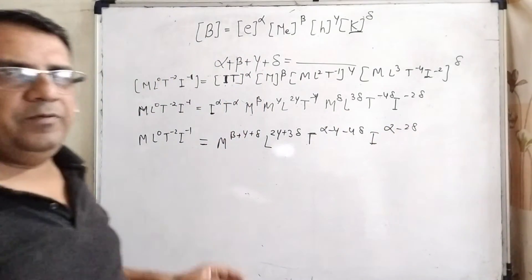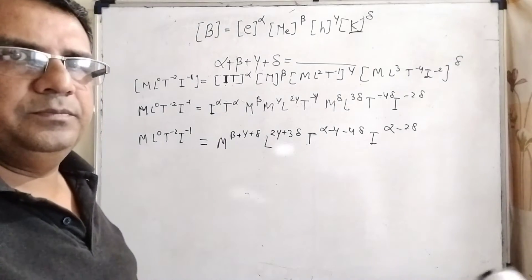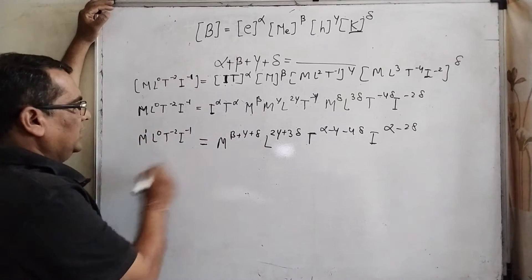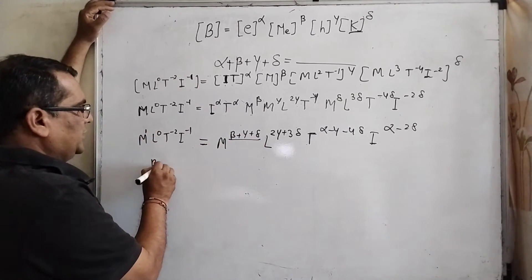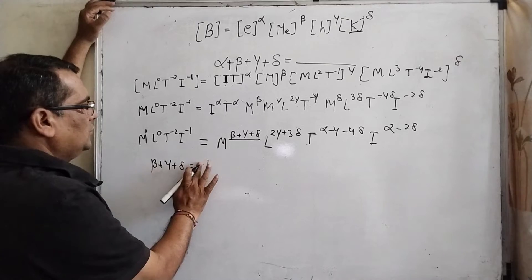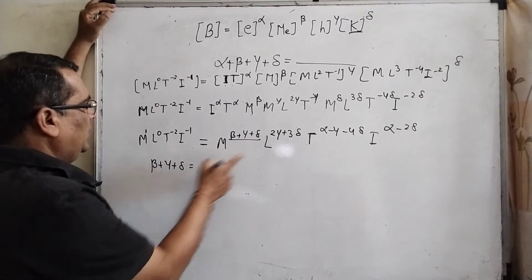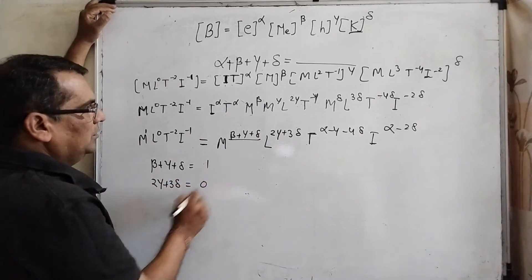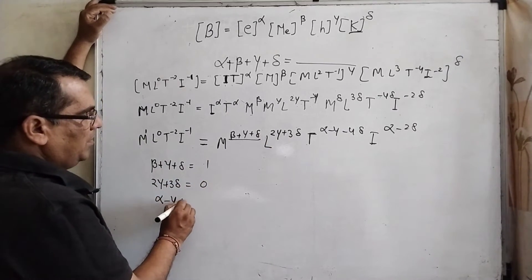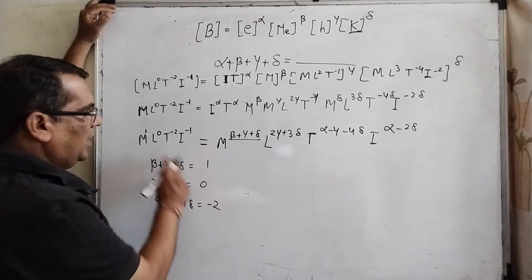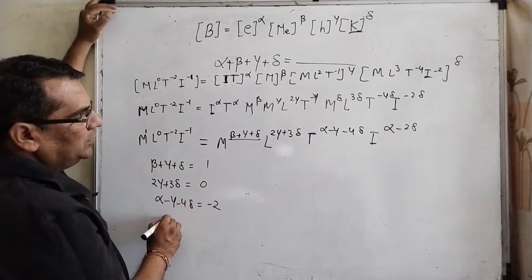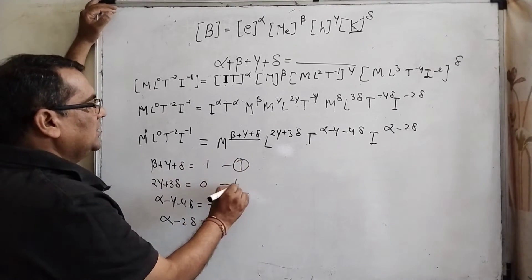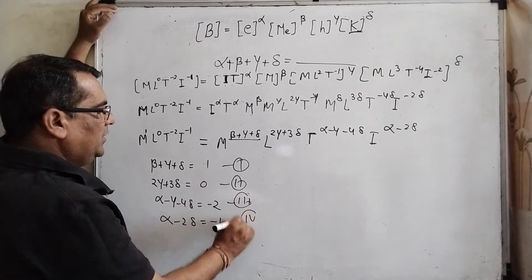Now compare with the left-hand side. The power of M is 1, giving equation 1: β + γ + δ = 1. The power of L is 0, giving equation 2: 2γ + 3δ = 0. The power of T is −2, giving equation 3: α − γ − 4δ = −2. The power of I is −1, giving equation 4: α − 2δ = −1. These are our four equations.